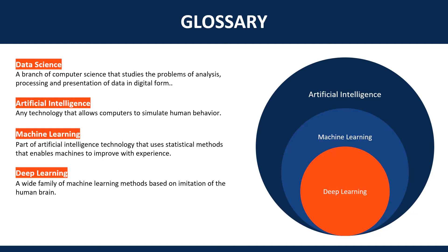Artificial intelligence is any technology that allows computers to simulate human behavior. In AI, we're trying to mimic the way humans make decisions — whether it's to classify something as red or yellow, whether it's to synthesize speech — we're trying to mimic how people make a decision and apply that knowledge to computers. That whole thing is called artificial intelligence.